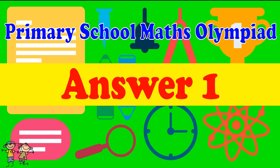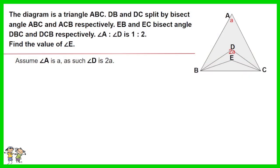Answer for question 1. Assume angle A is A, as such angle D is 2A. Assume angle B is 4B, and angle C is 4C. For triangle ABC, you have A plus 4 sets of B plus C is equal to 180 degrees. This is your equation 1.